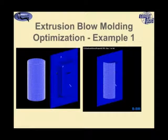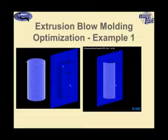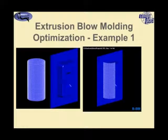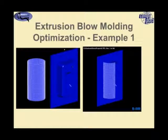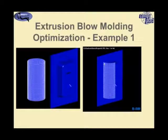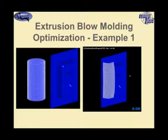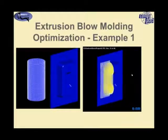Here is an example of optimization in extrusion blow molding. We're going to start from the parison in the proper finished position, and due to symmetry we're only going to use half the mold cavity, since the other half is identical. We'll go further and take advantage of two planes of symmetry, using only one quarter of the total parison, and look at what happens during forming as the mold closes and inflation takes place.